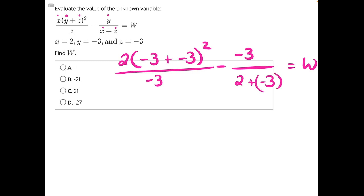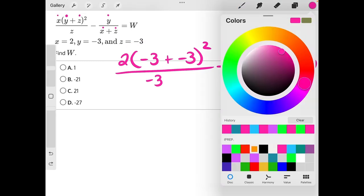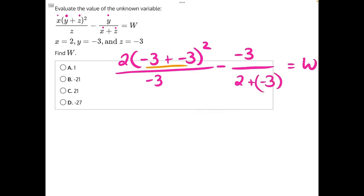So now we can start to simplify from left to right. Starting with our numerator up here, we need to fix our parentheses first. So a negative 3 plus a negative 3 will give us negative 6. So we'll have 2 times negative 6 squared over negative 3.